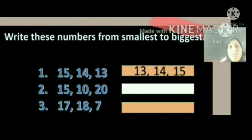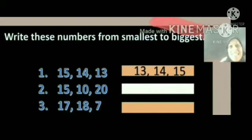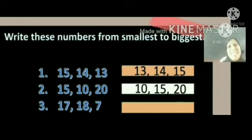The second question is: 15, 10, 20. Our aim is to arrange these numbers from smallest to biggest. Which number is the smallest? That is the number 10. Second, you have to write the number 15. Finally, the number is 20. So 10, 15, 20 are the numbers in order from smallest to biggest.